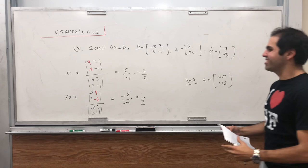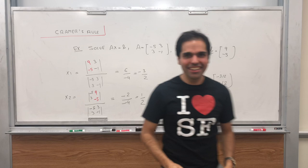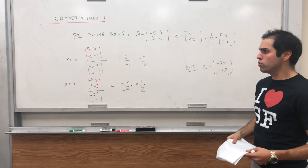Then the answer is simply x = [-3/2, 1/2]. I mean, how beautiful is this? Without doing any single row reduction, we found a solution to our system. People say they hate determinants, I don't get it. Not down with determinants, up with determinants.